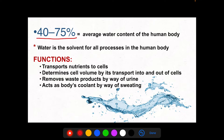Water has several main functions. Number one, it transports nutrients to the cells because 90% of the fluid portion of the blood is water. It also determines cell volume by its transport into and out of cells, balancing the concentration of substances in and out of the cell, like in the processes of diffusion or osmosis. Additionally, water removes waste products by way of urine and acts as the body's coolant by way of sweating.